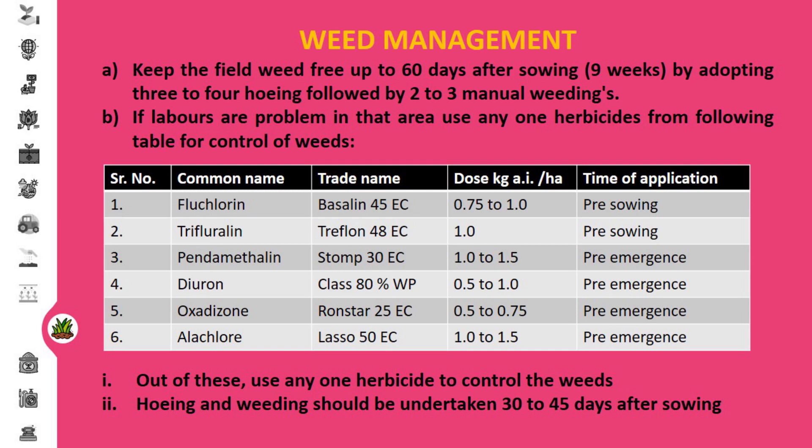In case of weed management, keep the field weed-free for up to 60 days after sowing by adopting three to four weedings followed by two to three manual weedings. If weeds are a problem in that area, use any one herbicide from the following table for controlling weeds. Weeding and hoeing should be undertaken 30 to 45 days after sowing after application of herbicide.